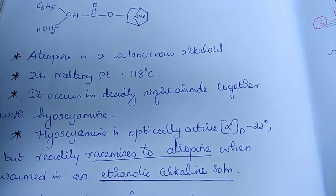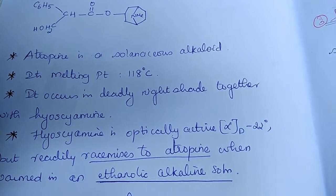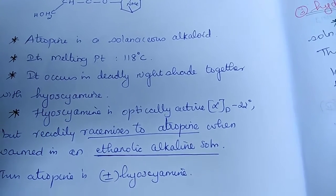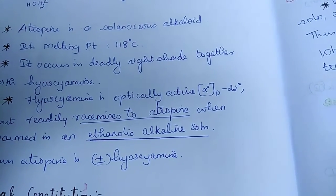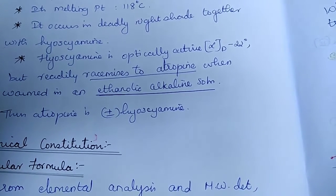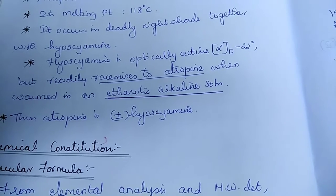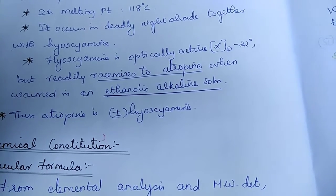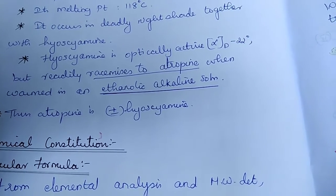Atropine is a solenaceous alkaloid. Its melting point is 118 degrees Celsius. Its common name is hyoscyamine and it is an optically active compound. It readily racemizes to atropine when warmed in ethanolic solution. Thus atropine is plus or minus hyoscyamine.